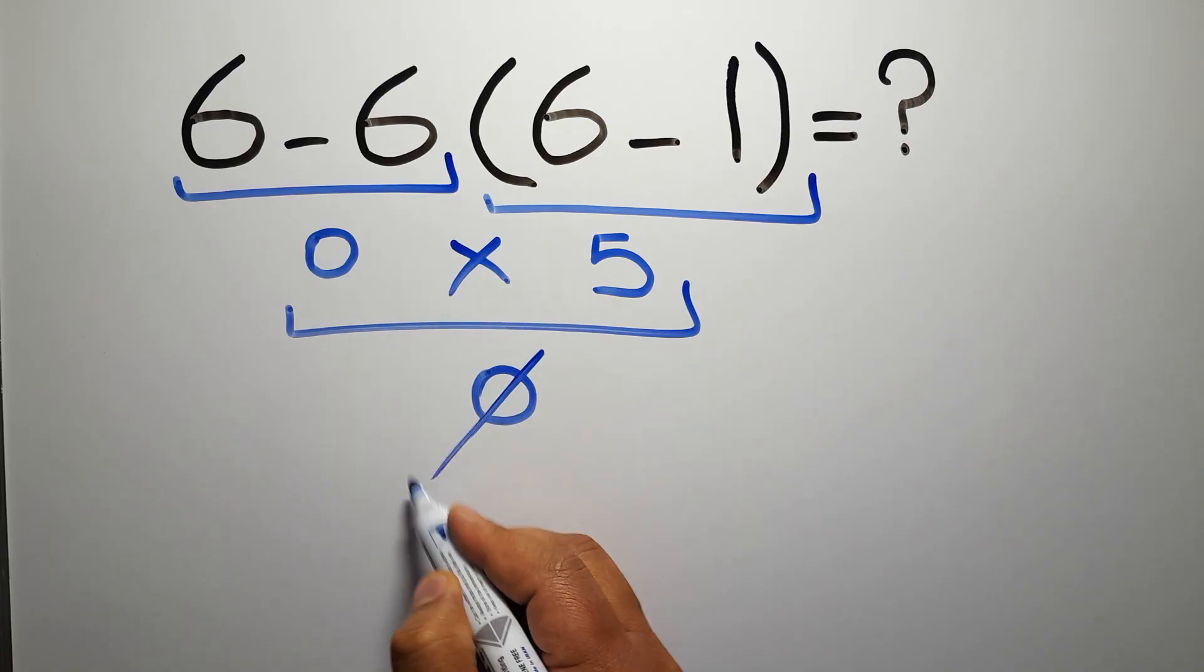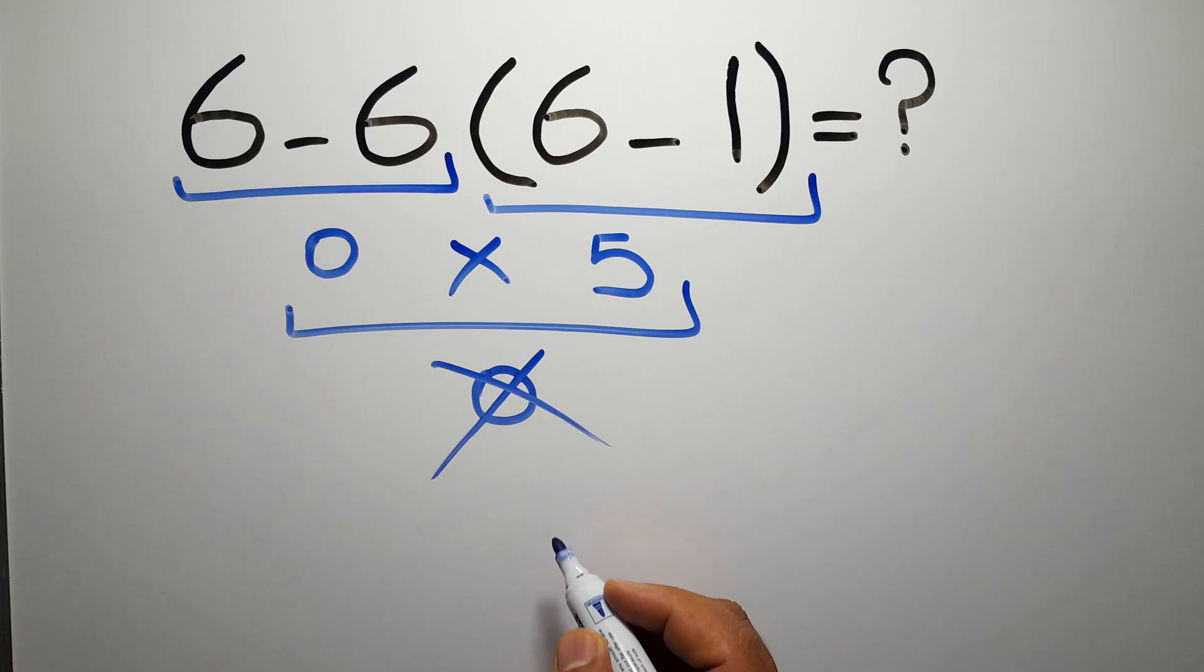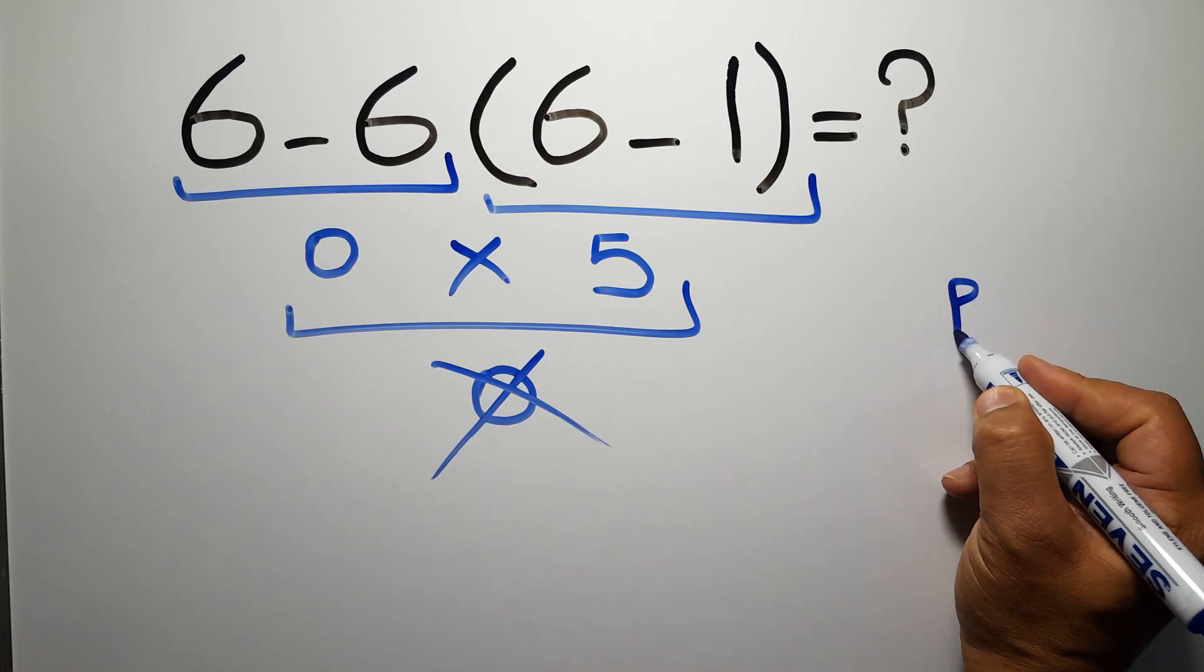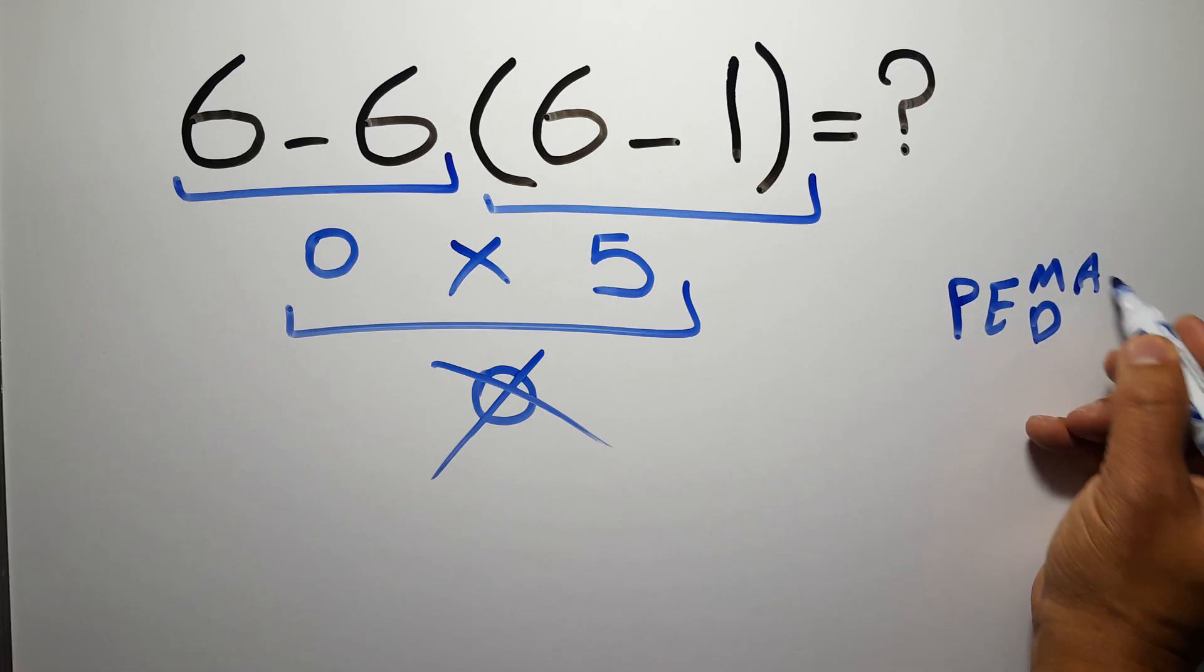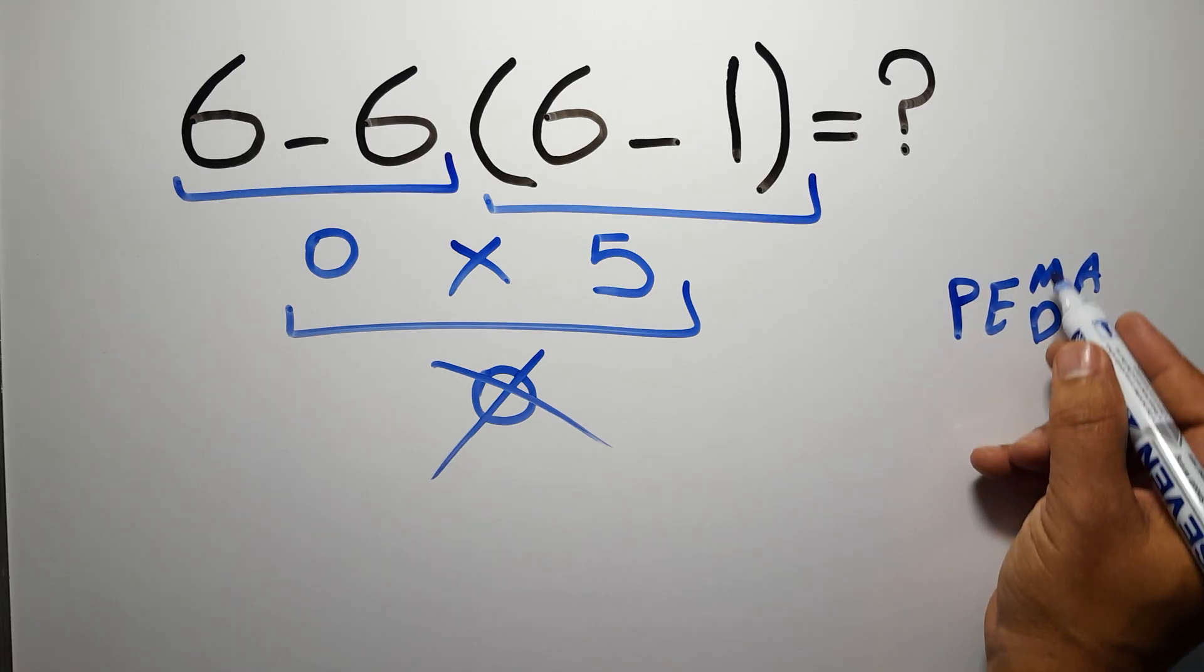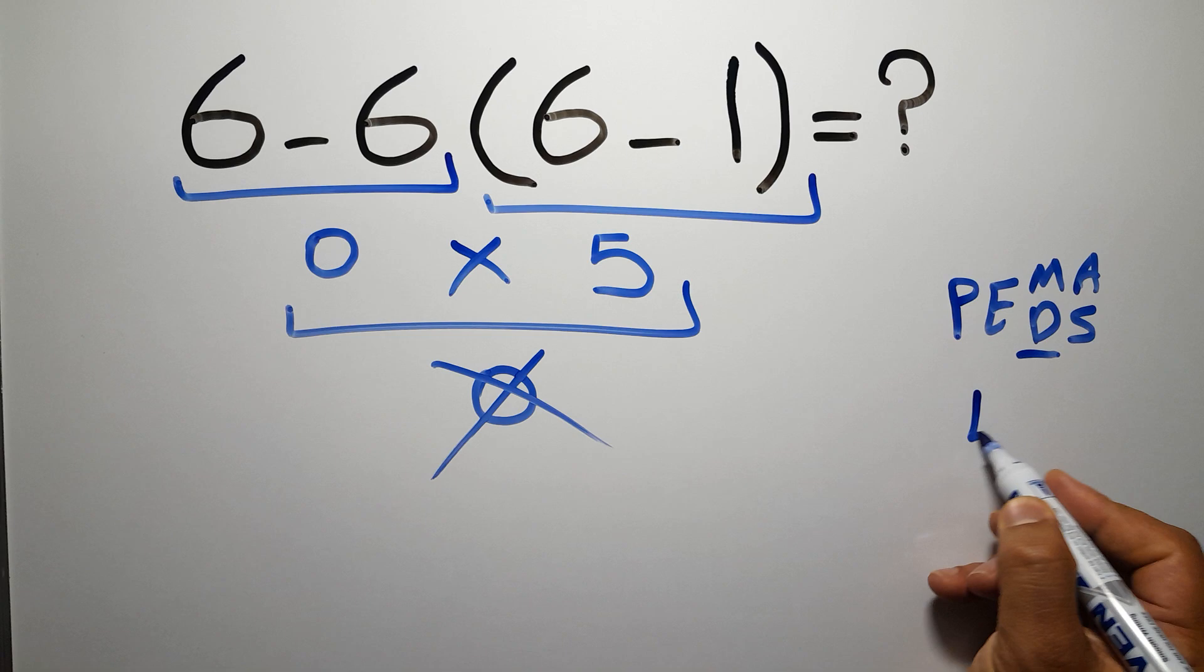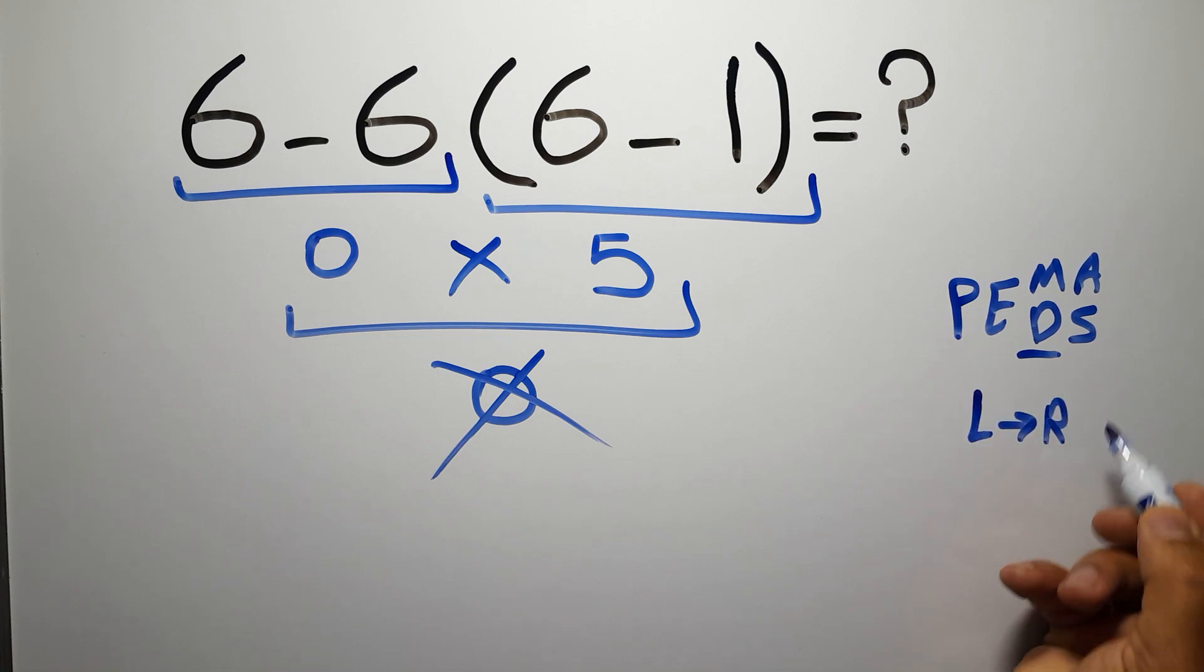But this answer is not correct, because according to the order of operations, first we have to do parentheses, then exponents, then multiplication or division, and finally addition or subtraction. Remember that multiplication and division have equal priority, and we have to work from left to right, and the same applies to addition and subtraction.